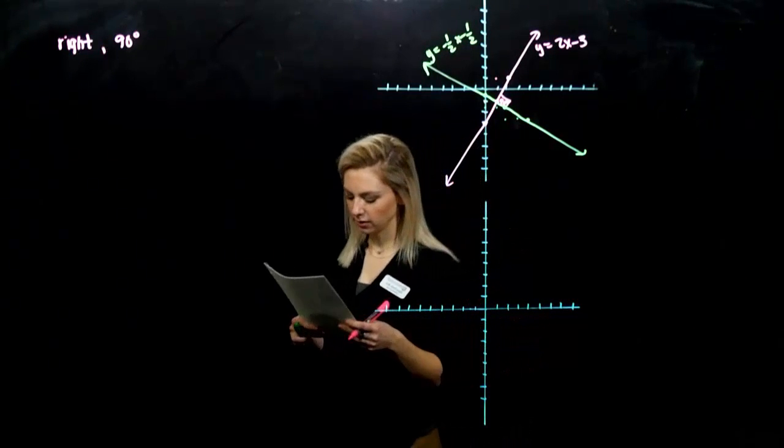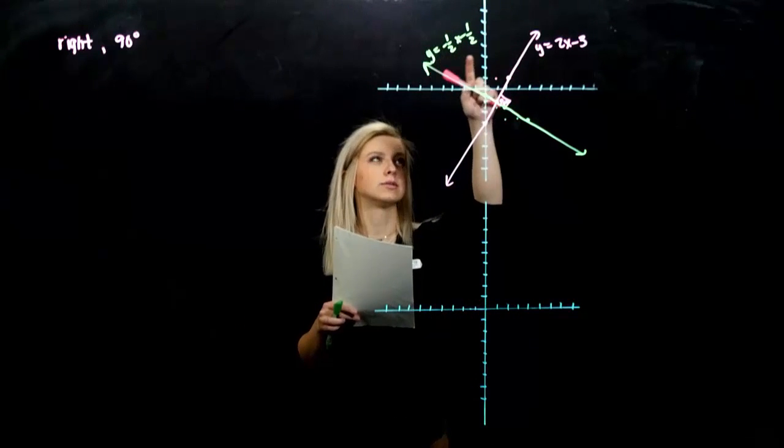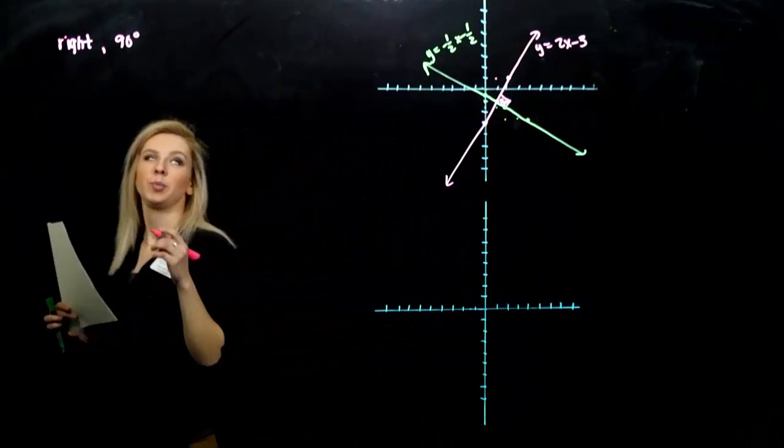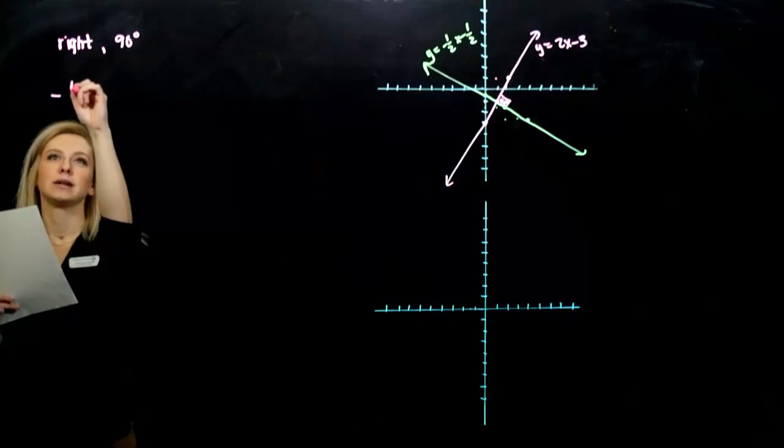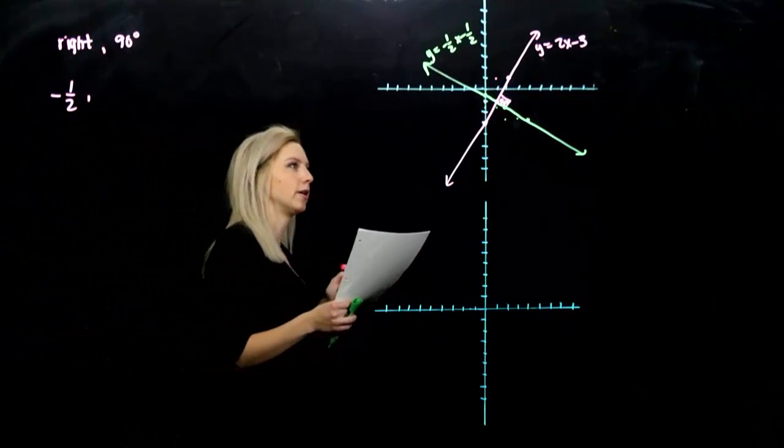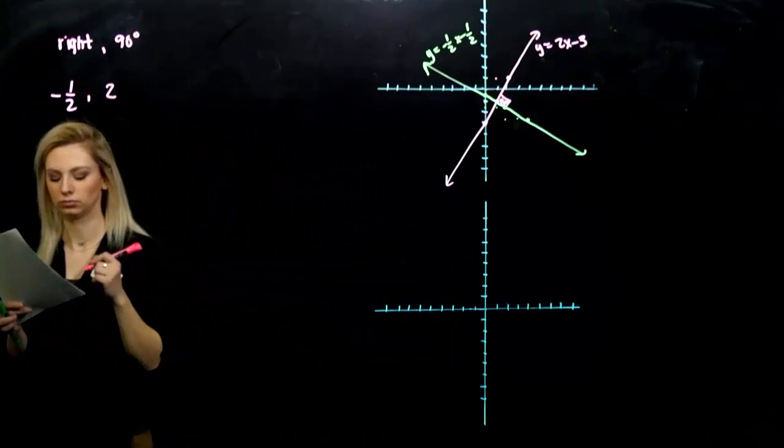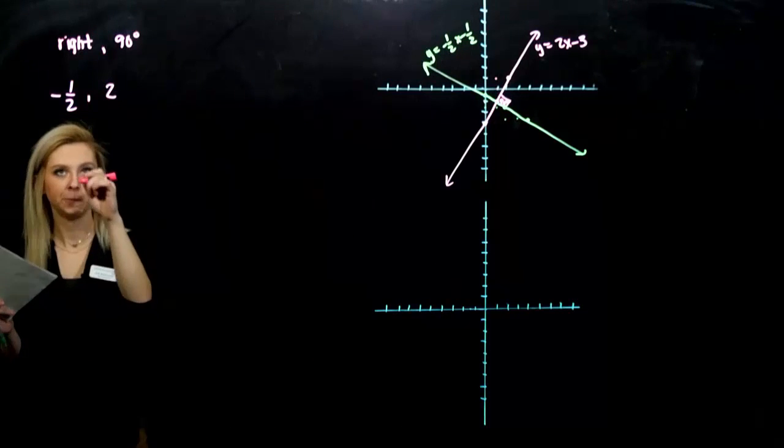So the slopes of the lines are what? They're both in that y equals mx plus b form. So the slope of the green one is minus 1 half. Slope of the pink one is 2. So what do you notice?